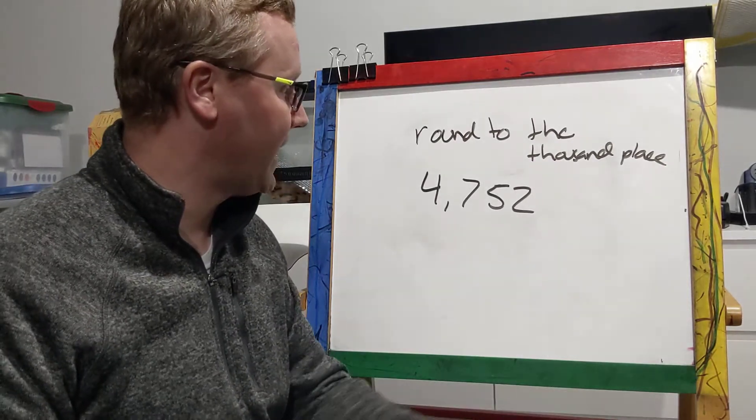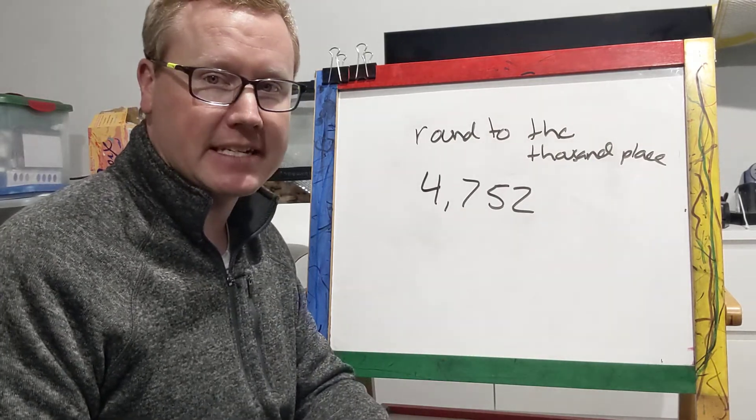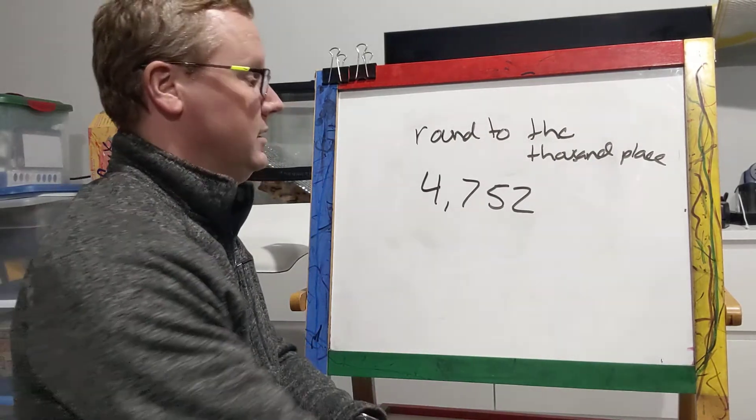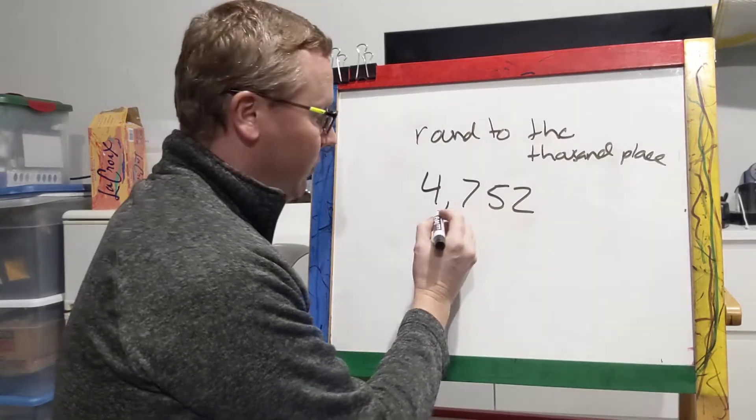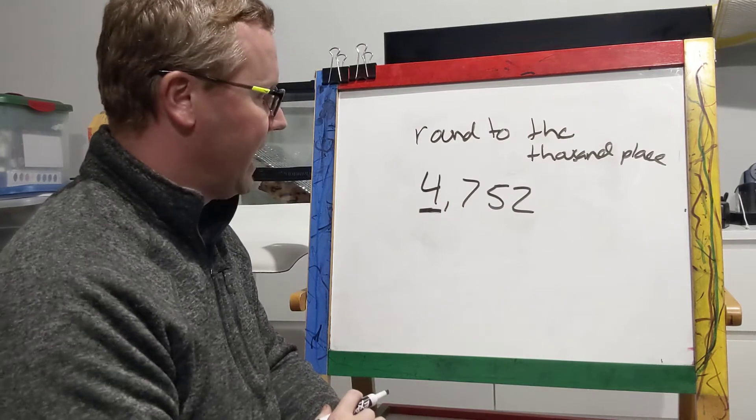So first we need to find the thousands place. What digit right here represents the thousands place? If you said four, you were thinking four, you are correct. So we are going to underline that digit.